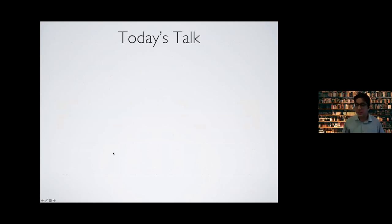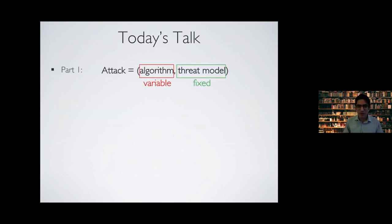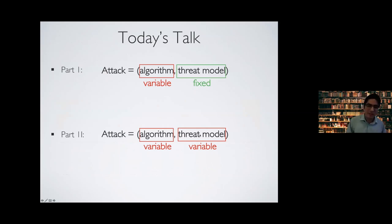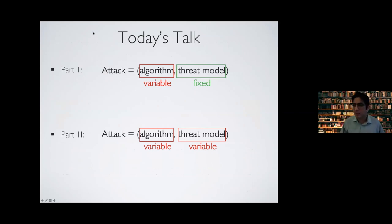So with this introduction, in today's talk, in the first part I'll consider attacks and defenses within a particular fixed threat model. In the second part, I'll show some results about generalization of robustness to unforeseen attacks, when the threat model can actually be different than the model we have trained our networks against.